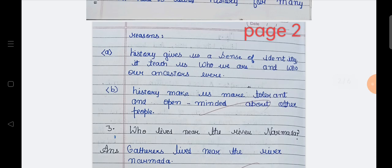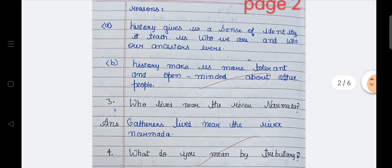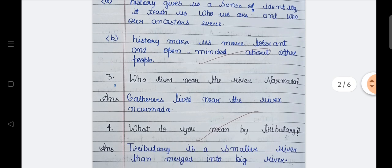The second one is history makes us more tolerant and open-minded about other people. It means that it gives us sense that what we are, who were our ancestors, and about early life. Second is history makes us more tolerant and open-minded, means sharp-minded about other people.